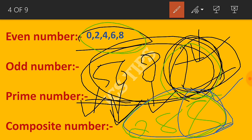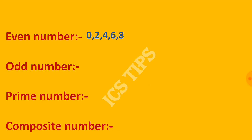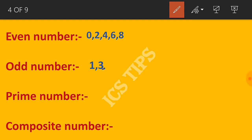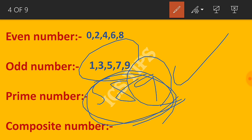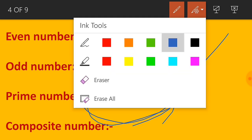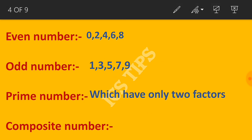Odd numbers have 1, 3, 5, 7, or 9 in the unit place. For example, 589 has 9 in the unit place, so it's an odd number.